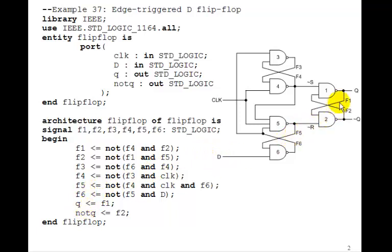So Q, the output, is just the signal F1. Not Q is just the signal F2. So there's the logic equations.